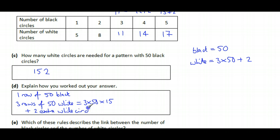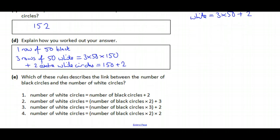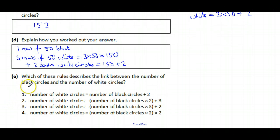Okay, so let's think about that. Which of these describes the link? So what did we do here? We had one row of black, we did three rows of the white. So it's the number of black times three, add on two. The number of black times three, and then add on the two arms. So it's got to be this one, isn't it?